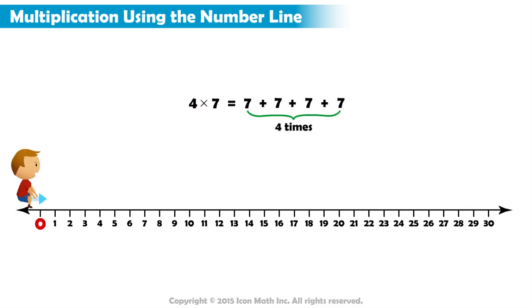We start at 0 and count 7 to the right 4 times. This is 1, 2, 3, 4, 5, 6, 7. Now we have our first group.